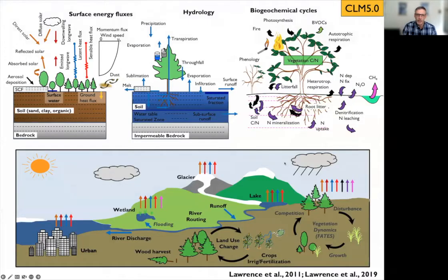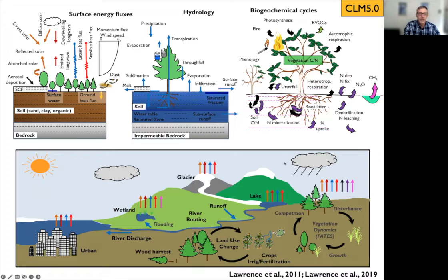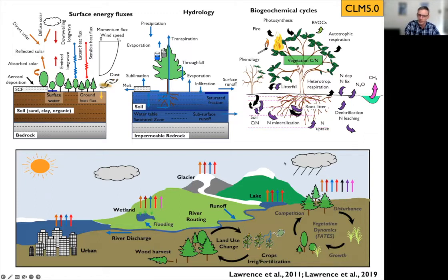This brings us to CLM5, which is the version part of CESM2 that you've been hearing about. The land model is very complex — every arrow on the diagram indicates a flux we're trying to represent, involving a lot of research behind each one. The top of the figure shows fluxes and states we're modeling; the bottom shows landscape-scale processes like river water flow, land use change, vegetation dynamics, and different surface types like glaciers, lakes, urban areas, and wetlands.